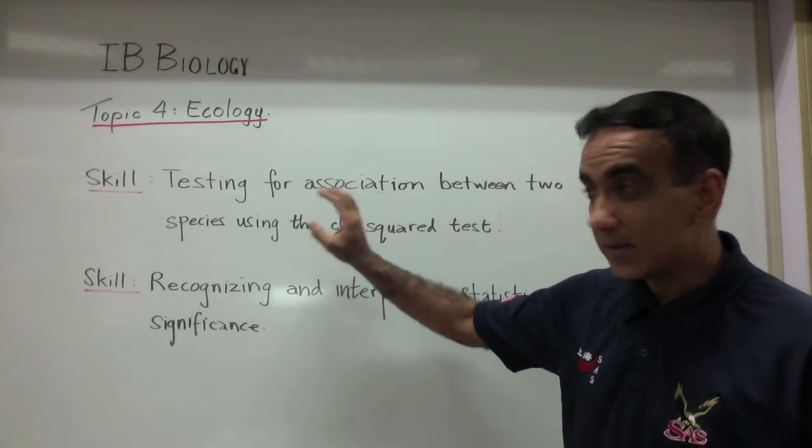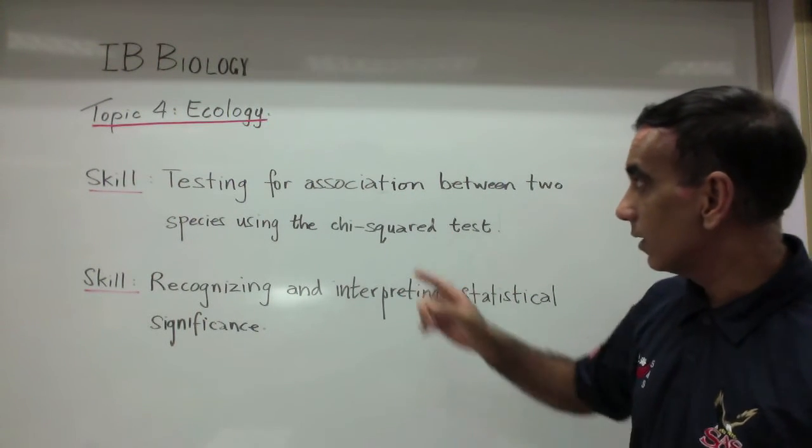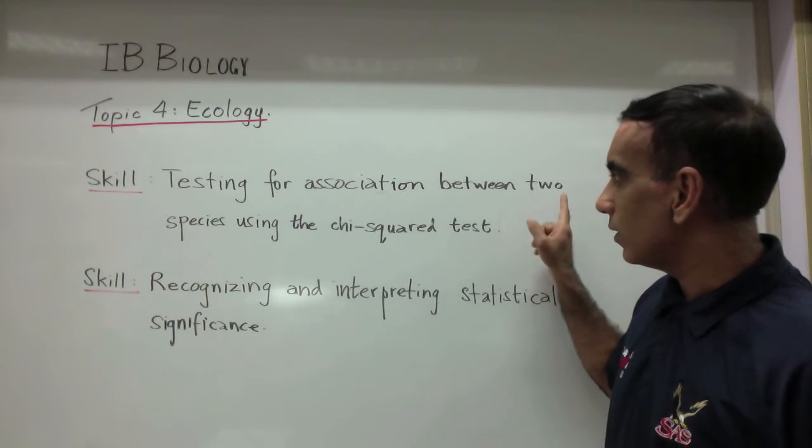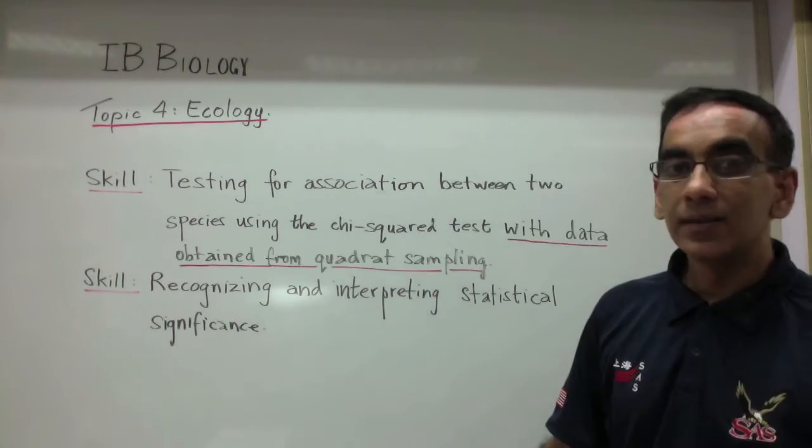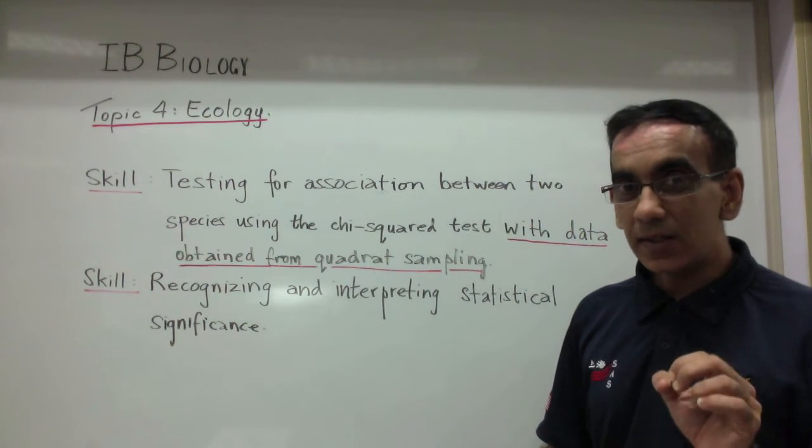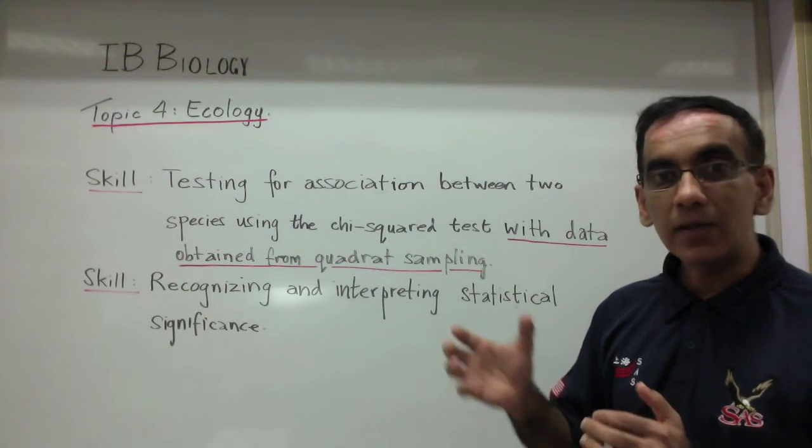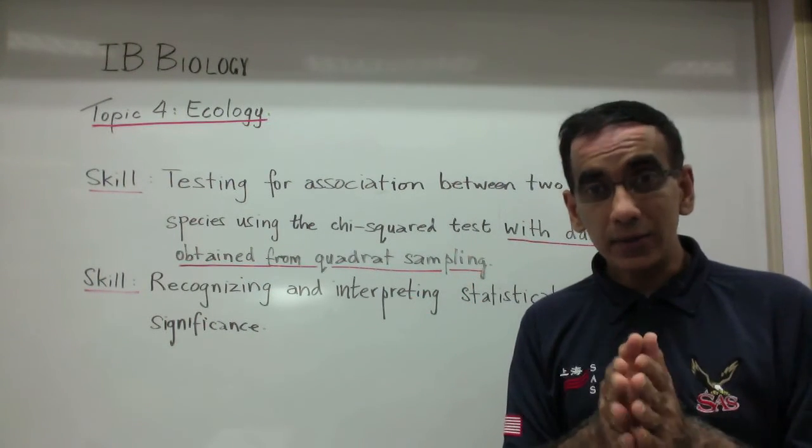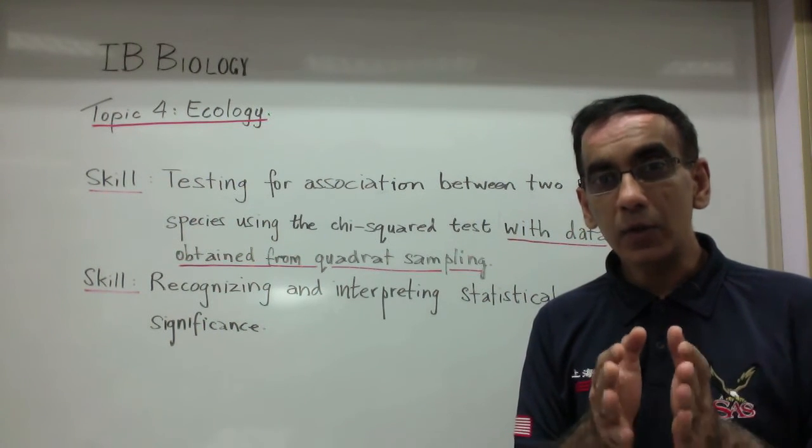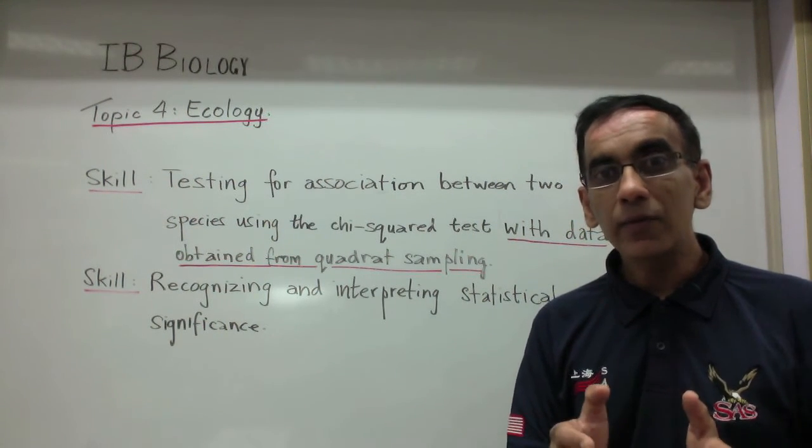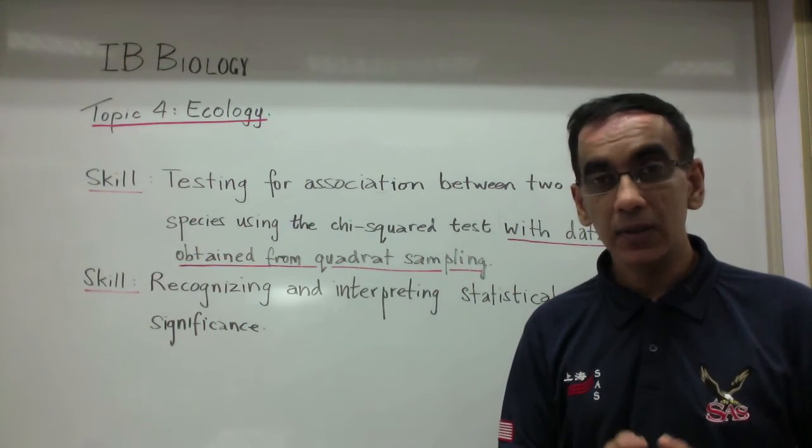In today's activity though, we focus specifically on the skill as given in the IB Biology guide for first exams in 2016: testing for association between two species using the chi-squared test. But in addition to that, we seek to clarify the use of the quadrat in obtaining this data. So let's take a look at this online lesson which seeks to model the use of the quadrat in looking for an association between two plant species in a field.